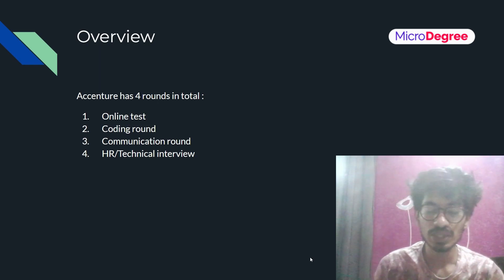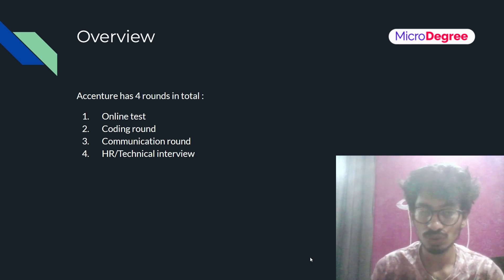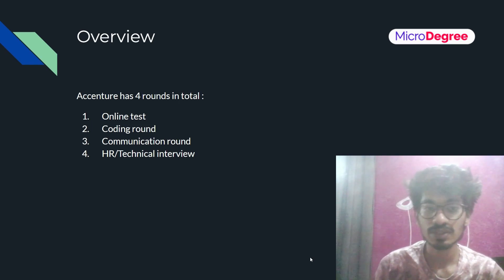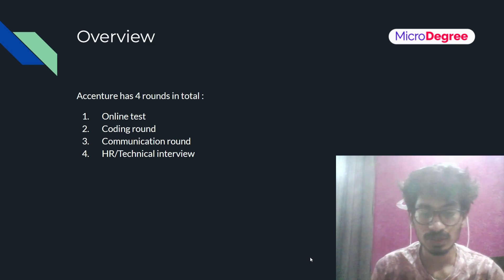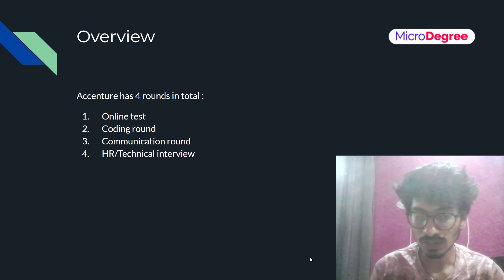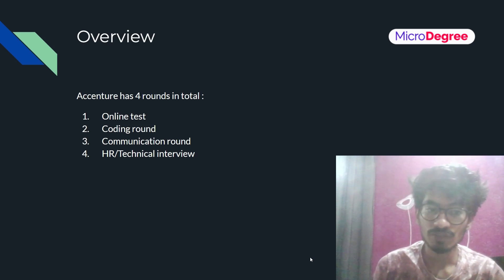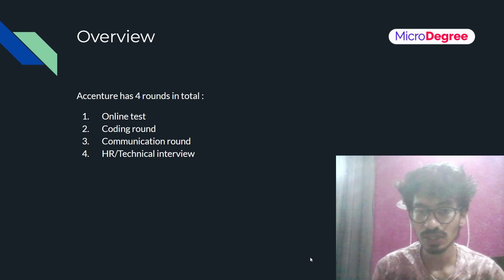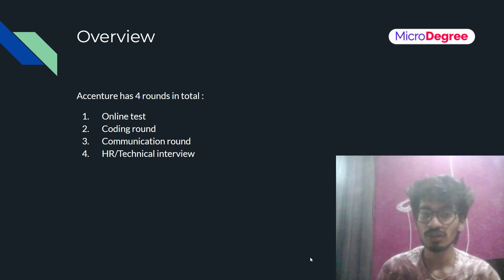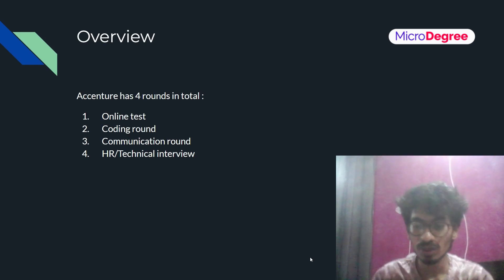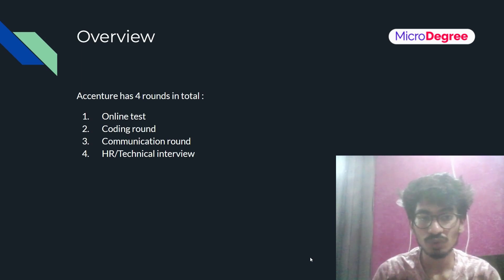After qualifying the online test, there is a coding round with two coding questions. Then there is a communication round where your communication skills are tested. The final round is an HR and technical interview, which is a one-on-one, face-to-face interview.